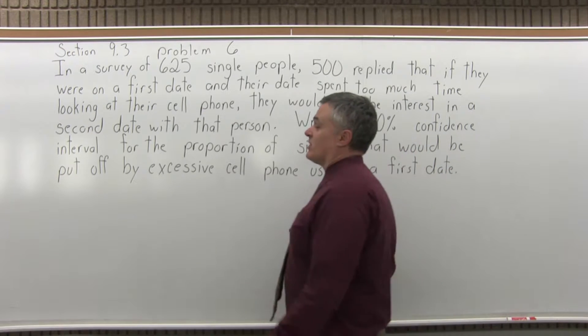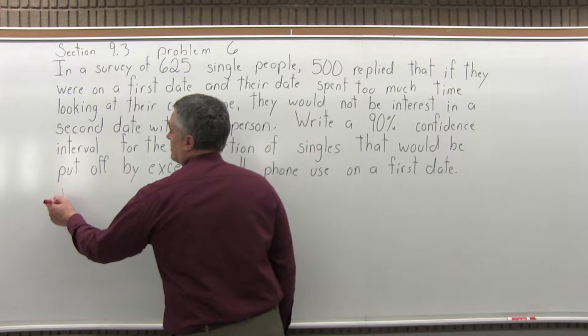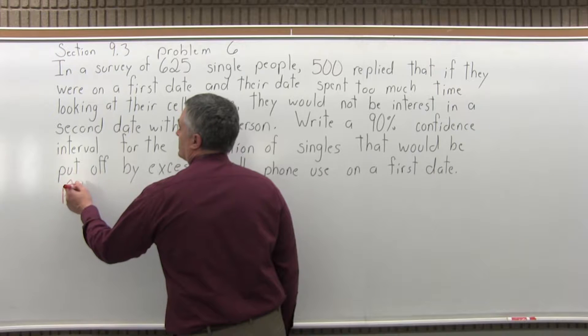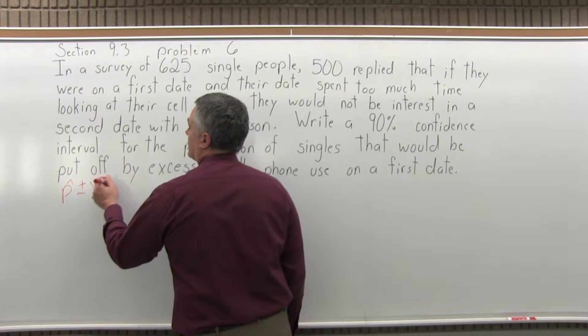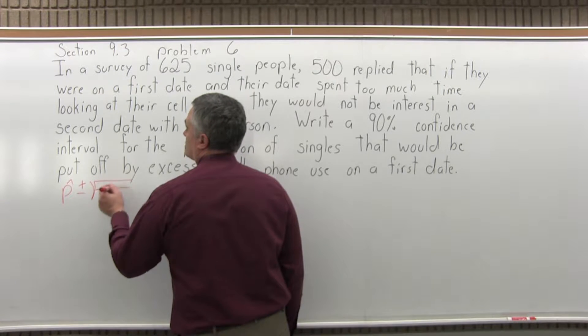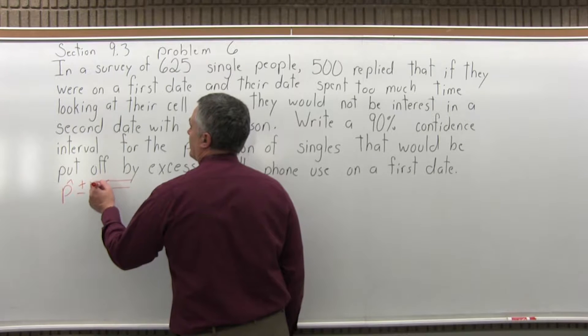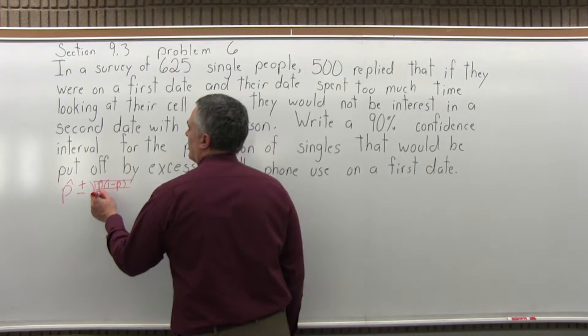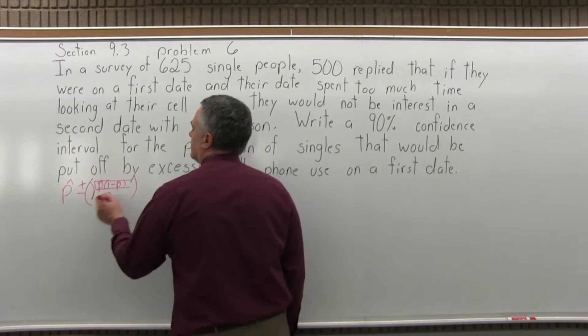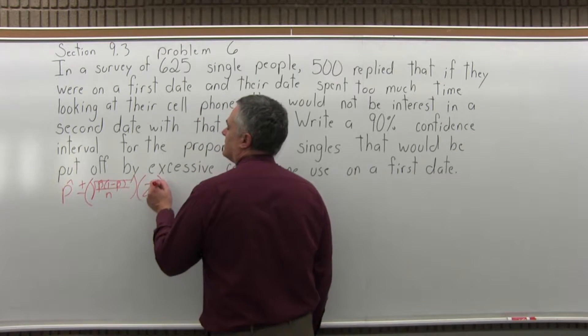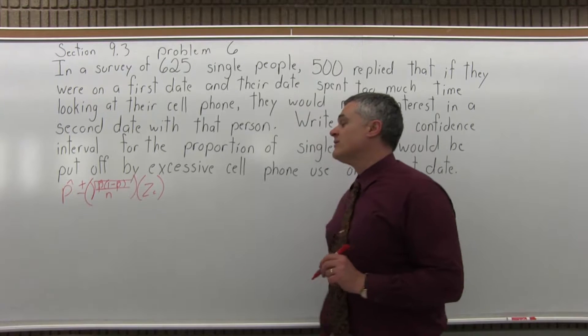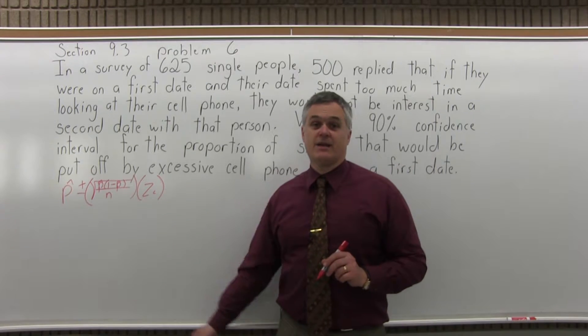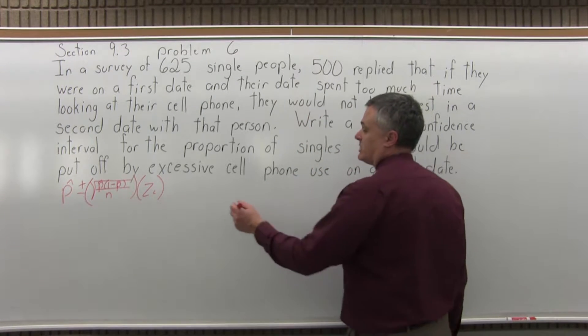So this is kind of an interesting confidence interval. This is a confidence interval for population proportion. And the formula for that is p hat plus or minus the square root of p hat times 1 minus p hat over n times z sub c.